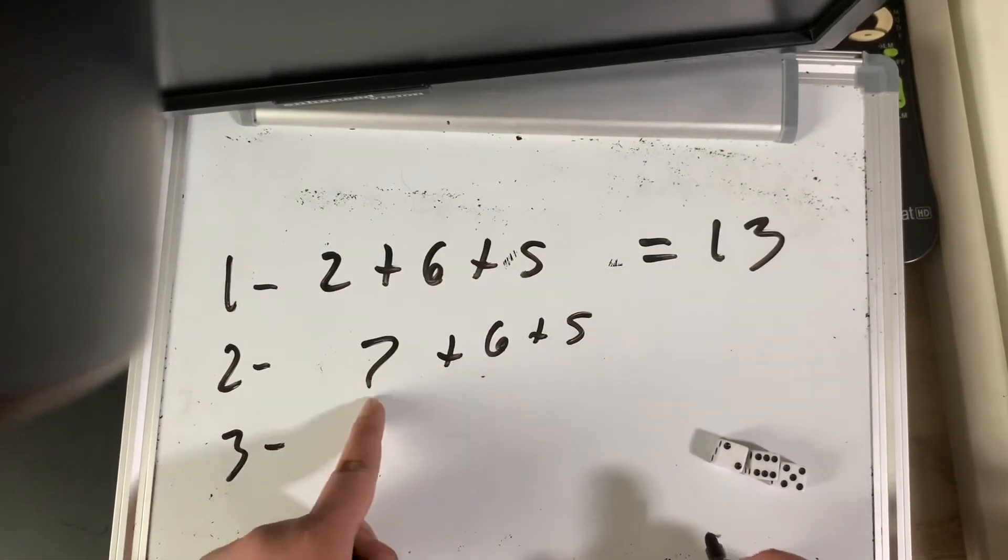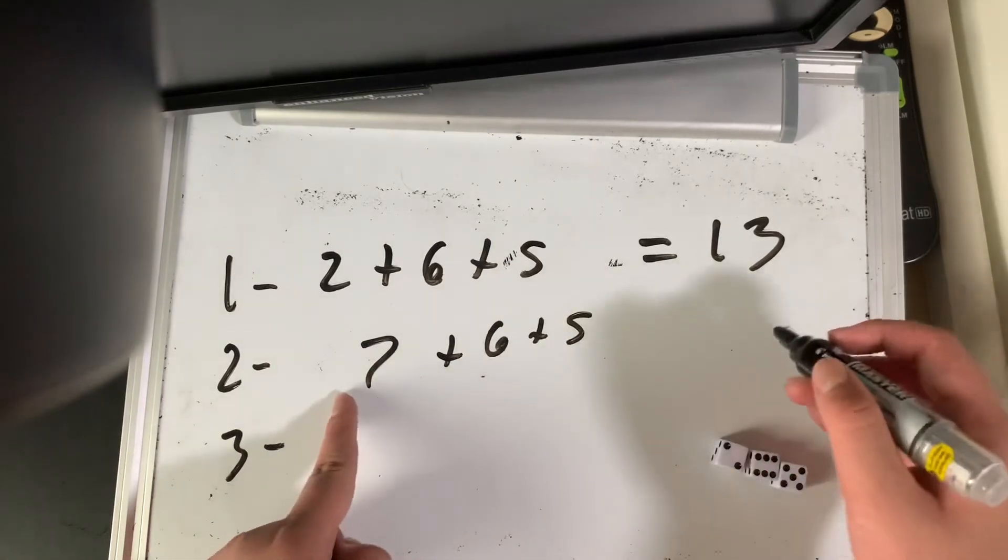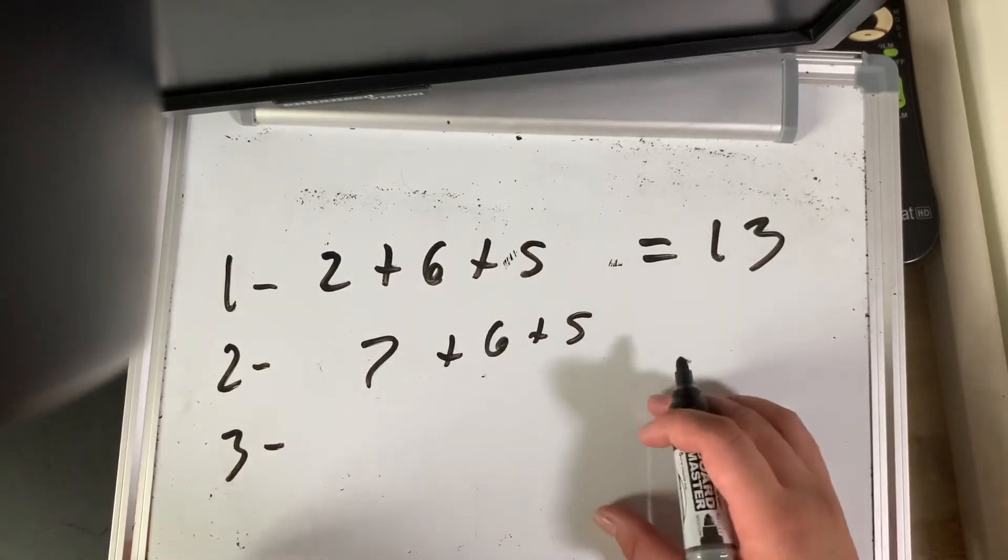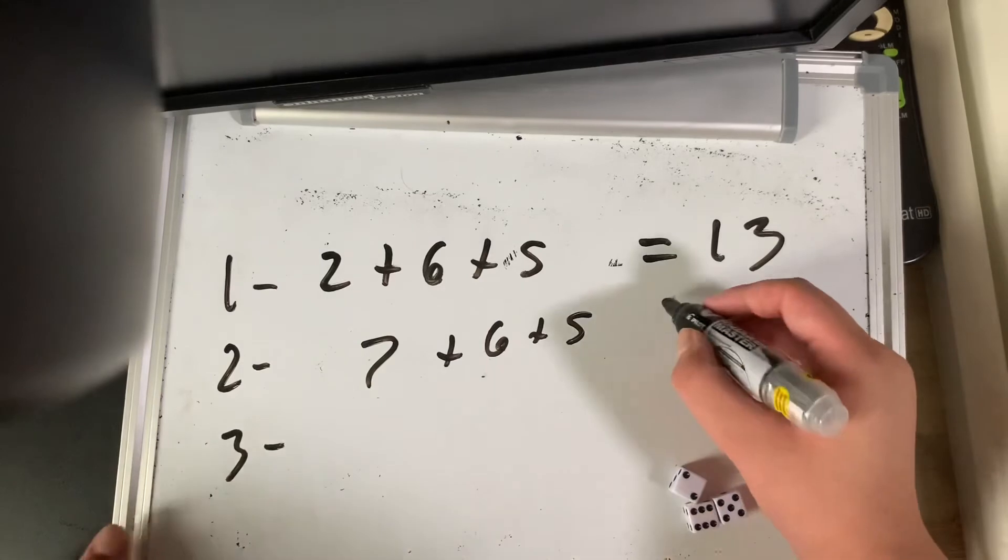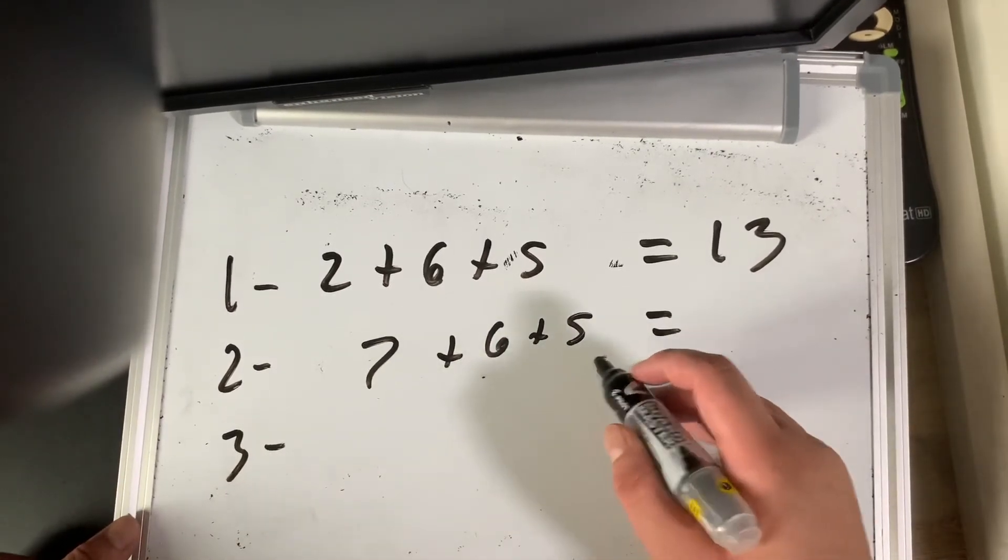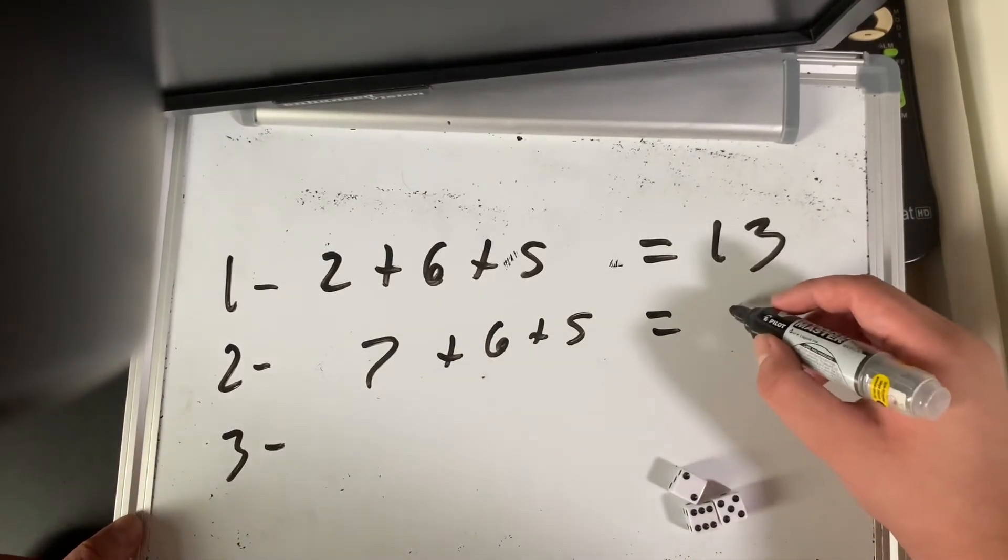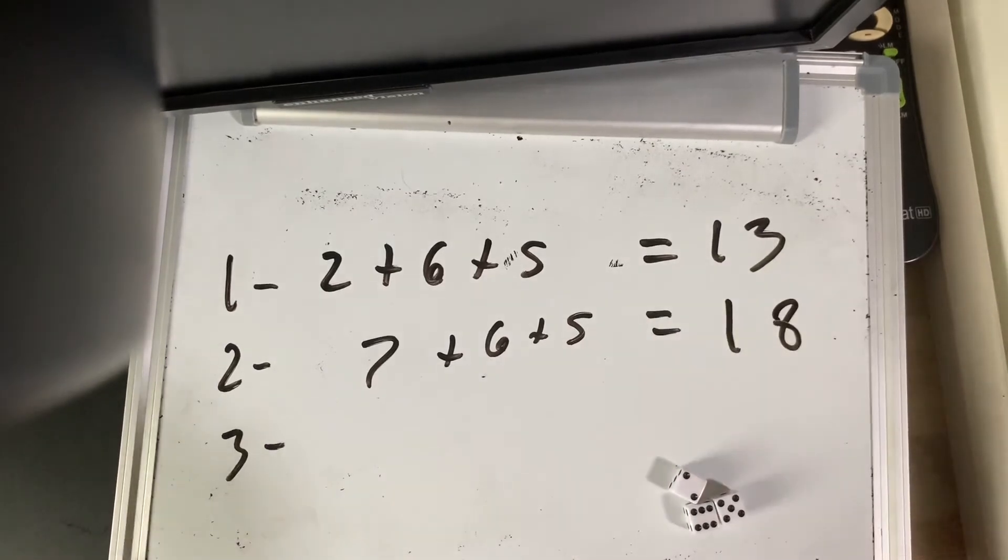So this is A, this is B, and this is going to be C. The thing is they both add up to 7, both the C on the bottom and the C on the top. And this is going to be 7 plus 6 plus 5, which is going to be 18.